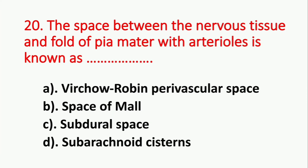Question number 20. The space between the nervous tissue and folds of pia mater with arterioles is known as? Option A: Virchow-Robin perivascular space. Option B: Space of Mal. Option C: Subdural space. Option D: Subarachnoid systems. The answer is Option A, Virchow-Robin perivascular space.